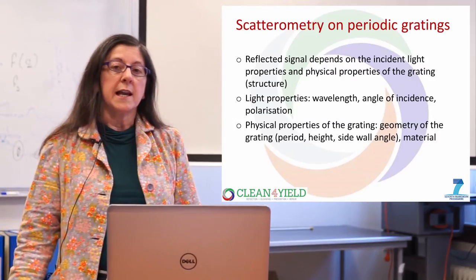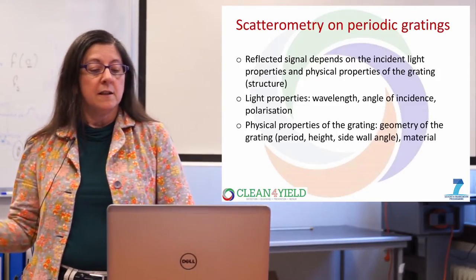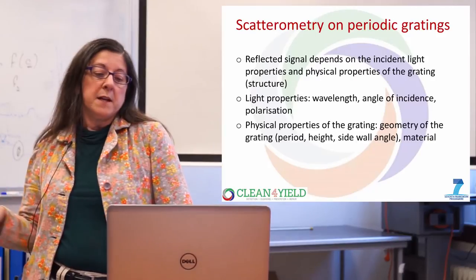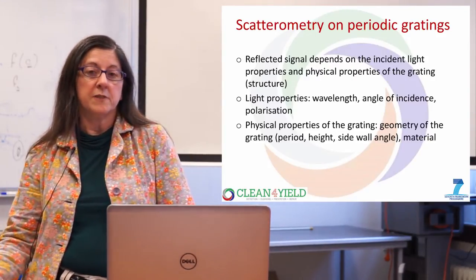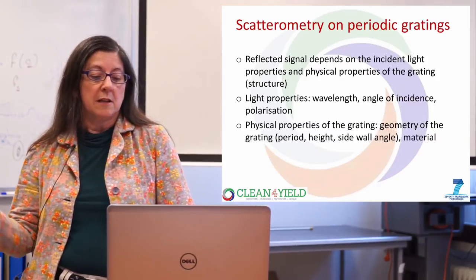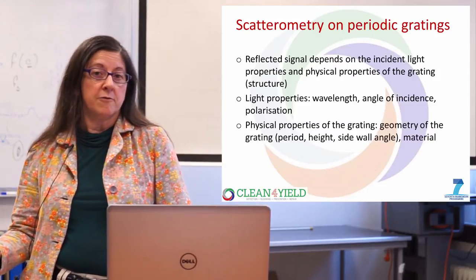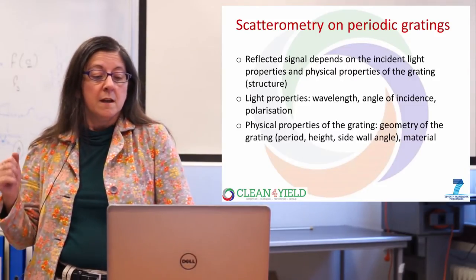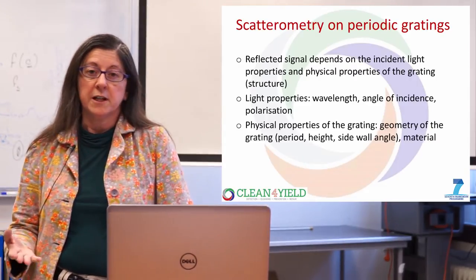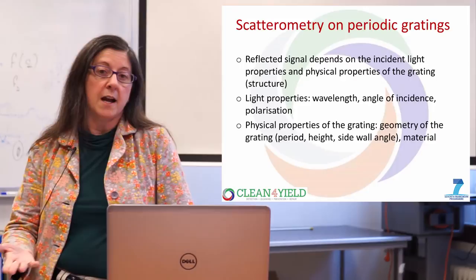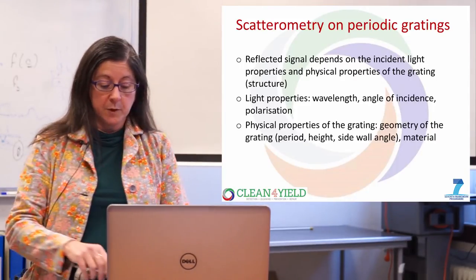What we can learn by looking at and measuring the scattered light is that the reflected signal depends on the incident light properties and the physical properties of the grating itself. The light properties can be the wavelength, the angle of incidence, and the polarization state of the light. The physical properties of the grating are related to the geometry: the period, the height, the sidewall angle, and the material of the grating itself.